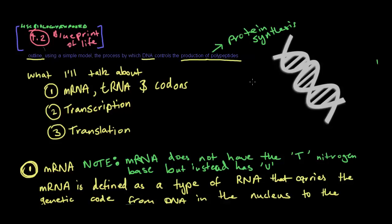Hey everyone, today I'm going to be talking about dot point 4.2 of the Blueprint of Life Syllabus. It basically asks us to outline, using a simple model, the processes by which DNA controls the production of polypeptides. The production of polypeptides is pretty much protein synthesis, and I'm going to be talking about how that actually happens.